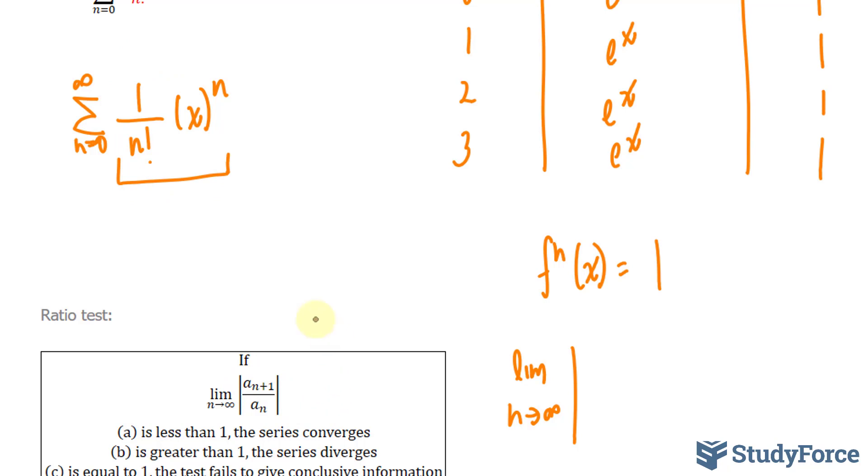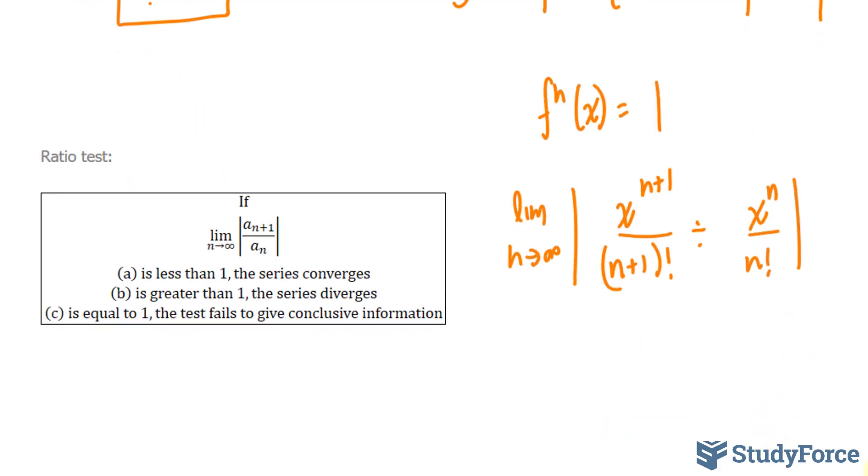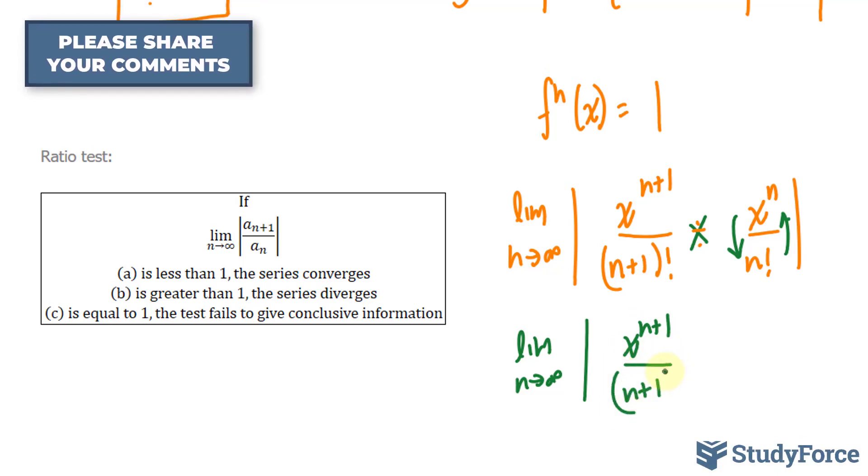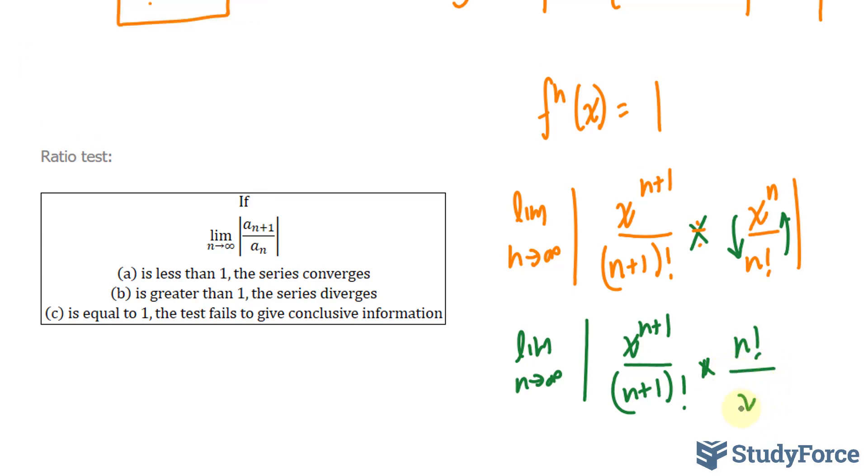And the top part here, we replace all the n's with n plus 1. So I have x to the power of n plus 1 over n plus 1 factorial. And then I divide by the expression itself. So I'll divide it by x to the power of n over n factorial. Dividing two fractions, I flip the second fraction and change this sign to multiply, where I have the limit as n approaches infinity, the absolute of x to the power of n plus 1 over n plus 1 factorial times n factorial over x to the power of n.